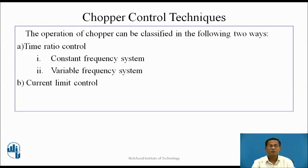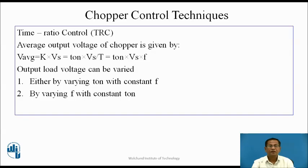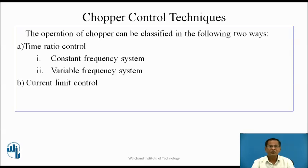Chopper control techniques. The operation of a chopper can be classified in two ways: Time Ratio Control (TRC) and Current Limit Control (CLC). TRC is further divided into constant frequency system and variable frequency system. In TRC, the average output voltage is V_avg = K·Vs, where K = Ton/T. Output voltage can be varied by varying Ton with constant frequency, or by varying frequency with constant Ton. In the constant frequency system, Ton is varied keeping T constant and the pulse width changes — this is also called Pulse Width Modulation (PWM) control. In the variable frequency system, Ton or Toff is kept constant while varying the frequency.